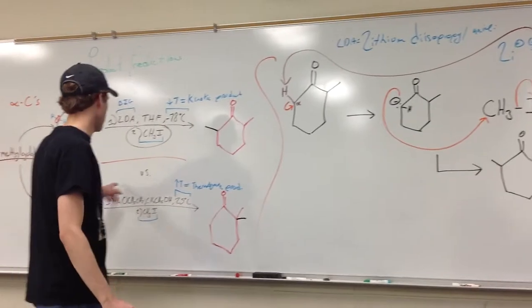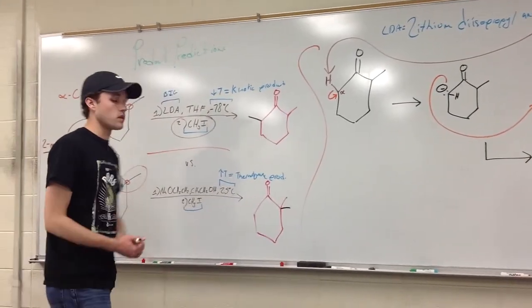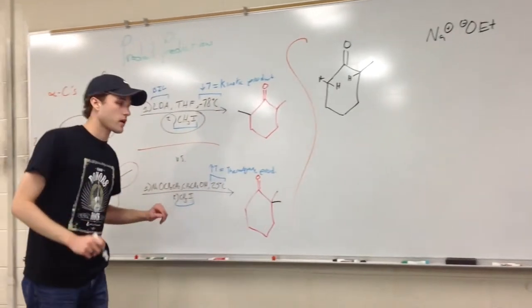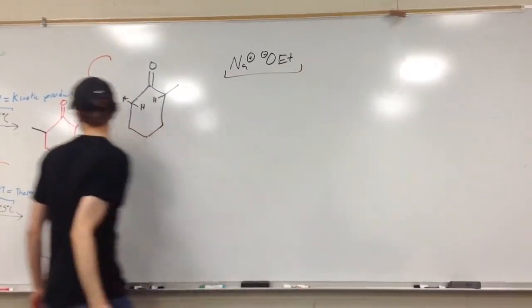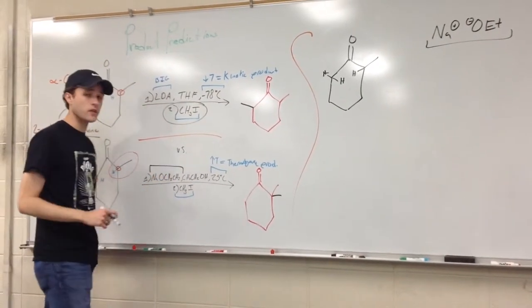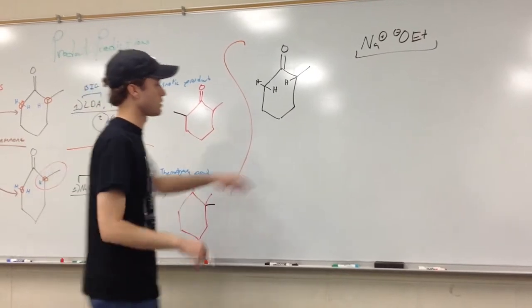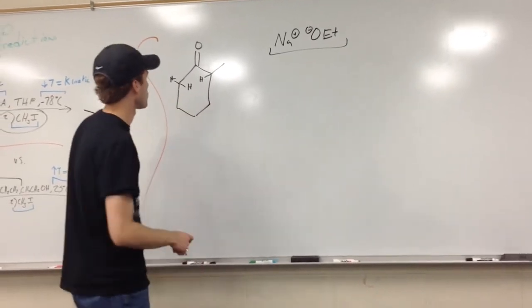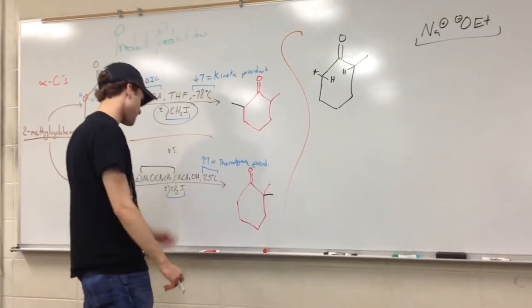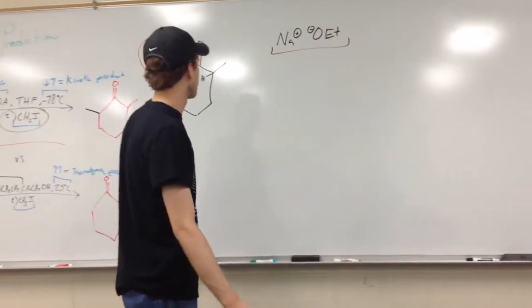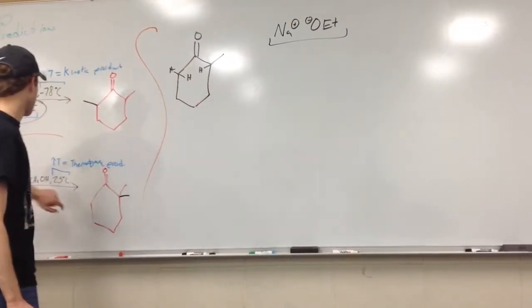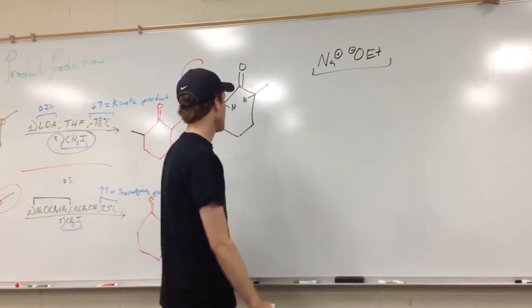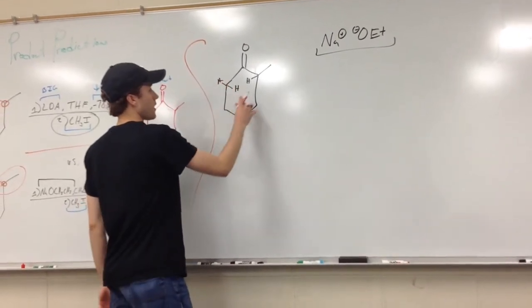Next we look at the mechanism for the thermodynamic product using the non-sterically hindered reagents. NaOEt and NaOCH₂CH₃ mean the exact same thing — they're both sodium ethoxide. This is just much easier to write. Because of our reaction conditions and because we don't have steric hindrance issues with this methyl group, thermodynamic products are going to attack at the most substituted alpha carbon in the ketone.